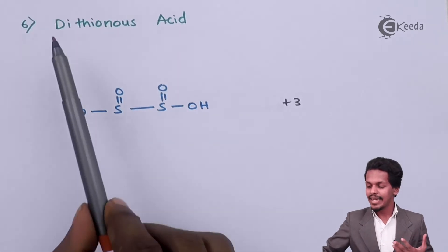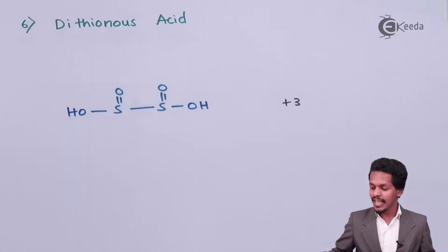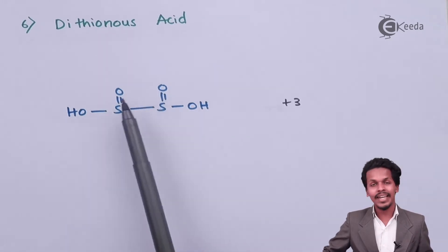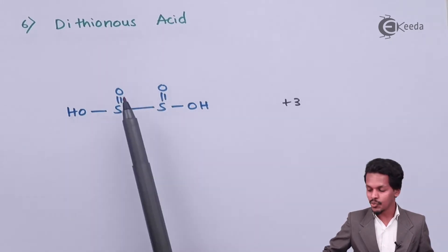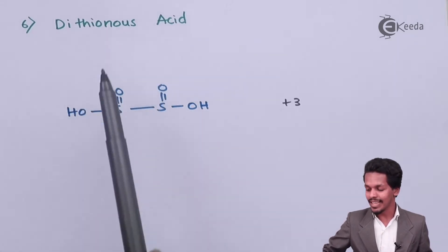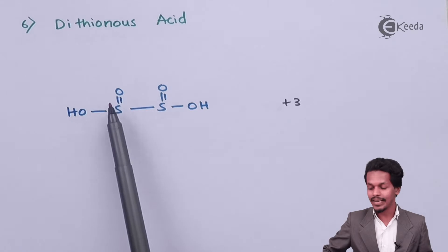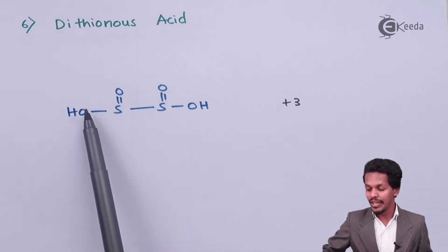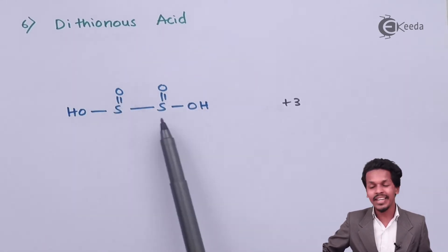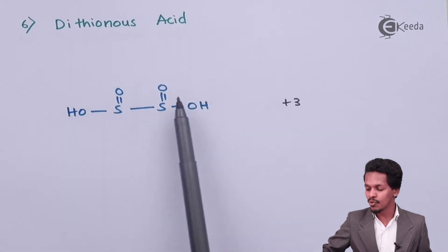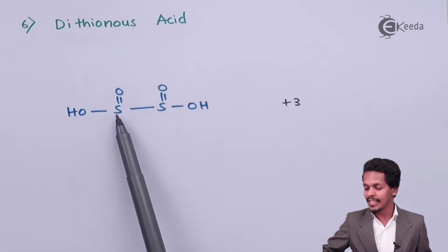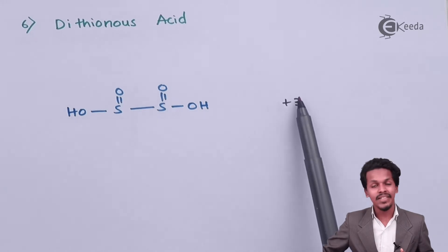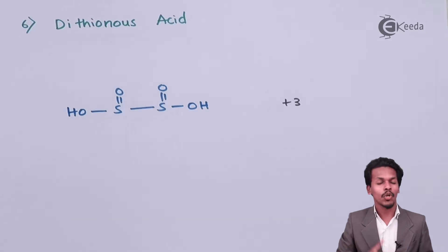The next is dithious acid. Here we can find similar groups attached — sulfur double-bonded to oxygen, also bonded to OH — and this same group is repeated and the two groups are joined together. The oxidation state of sulfur is plus 3.